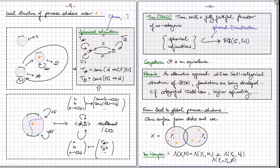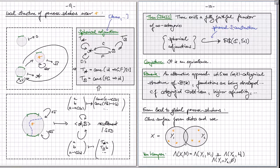We expect eventually that every perverse schober is locally precisely equivalent to a spherical adjunction, though that theorem is not yet fully established. We do have a construction — the spherical S-construction — which, from a spherical adjunction, produces a perverse schober. This requires about 50 pages of work, systematically understanding adjunctions and spherical adjunctions in the context of stable infinity categories. We can also glue these local perverse schobers to more global objects using Van Kampen-type formulas.